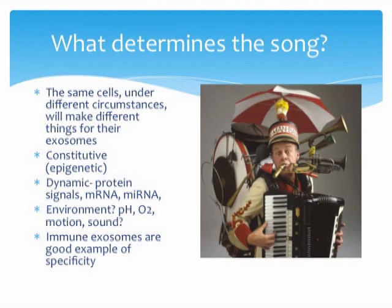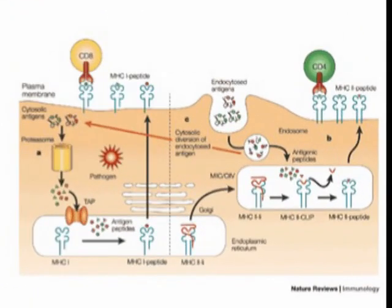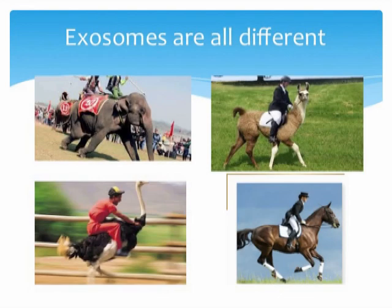Looking at exosomes from immune cells is a good example of specificity. Unlike other cells, immune cells have a very specific task — sometimes they produce and present antigens and produce antibodies — so what kind of song they're singing is very specialized and different. Exosomes are all different, just as songs are all different. Or if you prefer, just as beasts to be ridden are quite different: if you were to enter a race you could choose an ostrich, a llama, an elephant, or a horse, and there may be very different reasons to choose any of these.